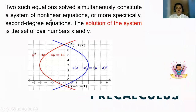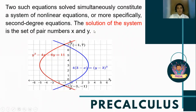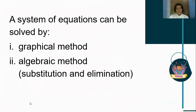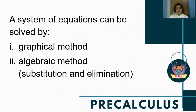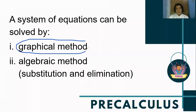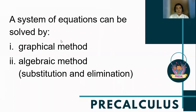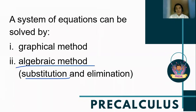All systems of nonlinear equations could have one or more solutions. A system of equations can be solved by a graphical method — the point of intersection of the two non-linear equations on the graph represents the solution. For the algebraic method, we can use either the substitution method or the elimination method to solve for the solutions.